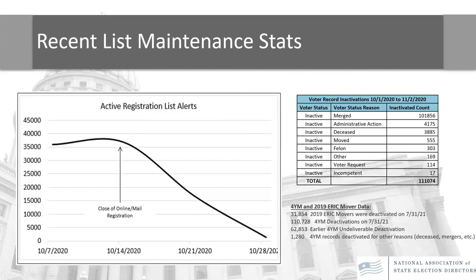Just some quick data on our registration list alert process: before a general election, we had about 40,000 registration list alerts — letting clerks know they might have a new registration to merge with an old one, a deceased voter, someone who moved, a felon, whatever it might be. As we head into election day, we work with all 1,850 municipalities to make sure they're addressing every single registration list alert so those poll books are as accurate as possible. A big part of that, as Rob and Heidi said, is education to voters — letting them know something's out of date and what they can do about it. I'll turn it back over to Amy. Thank you all — we'd be glad to answer any questions.